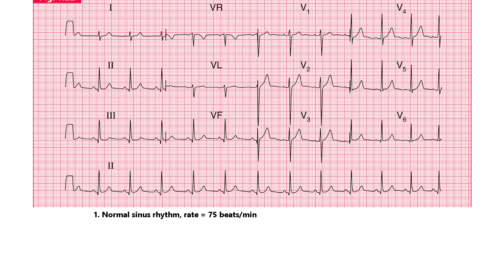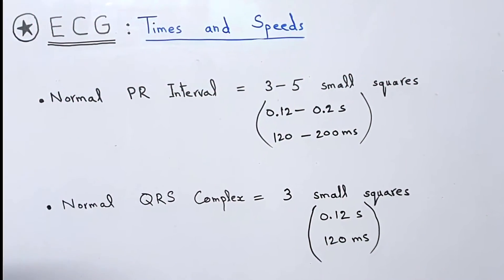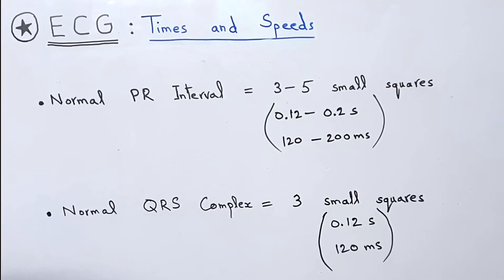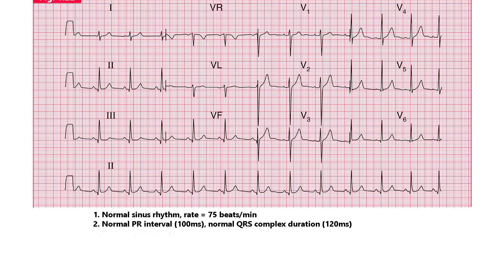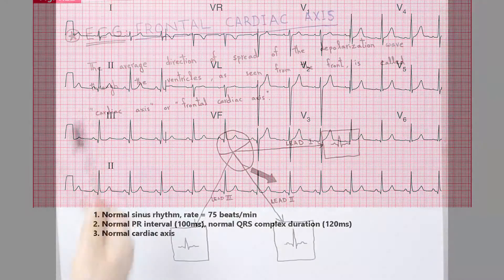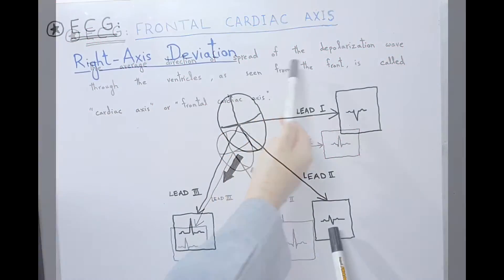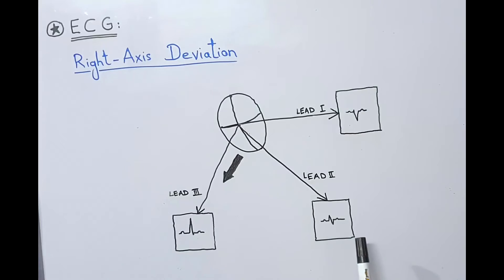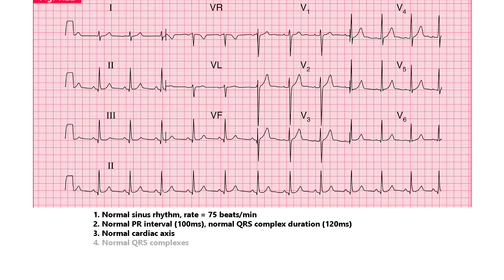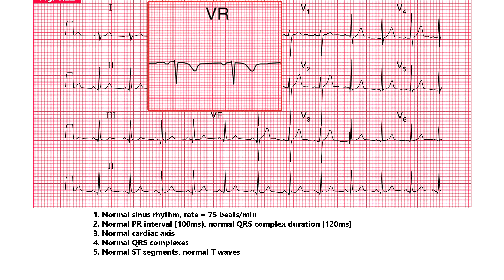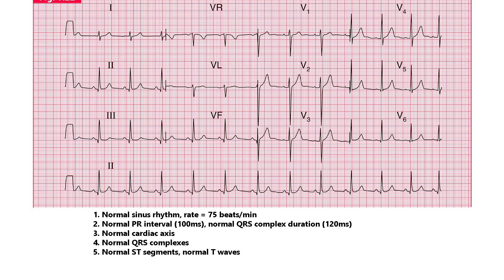In point number 2, we will write normal PR interval and normal QRS complex duration. Normal values of these conduction intervals are already discussed — you can pause the video to note them down. In point number 3, we will write normal cardiac axis. Point number 4 will be normal QRS complexes. Point number 5 will be normal ST segments and normal T waves. Inverted T waves in lead VR are normal. Abnormalities of ST segments will be discussed in upcoming videos.